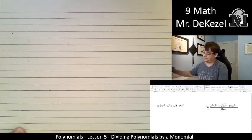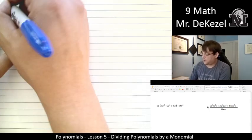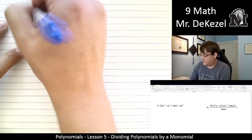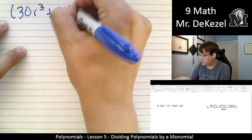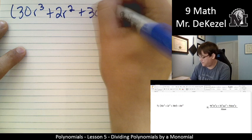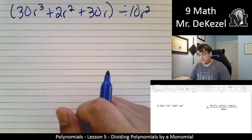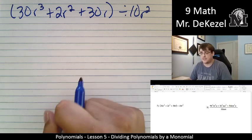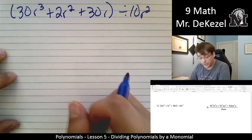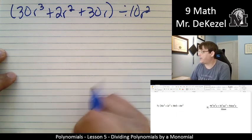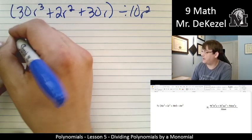So two more to do. We have 30r³ + 2r² + 30r, all divided by 10r². And if you're having trouble during the video, stop me during class. Stop your friend during class. And ask, what the heck is he talking about here? So get the help when you need it. If this is hard, that's okay. We can work through it together.